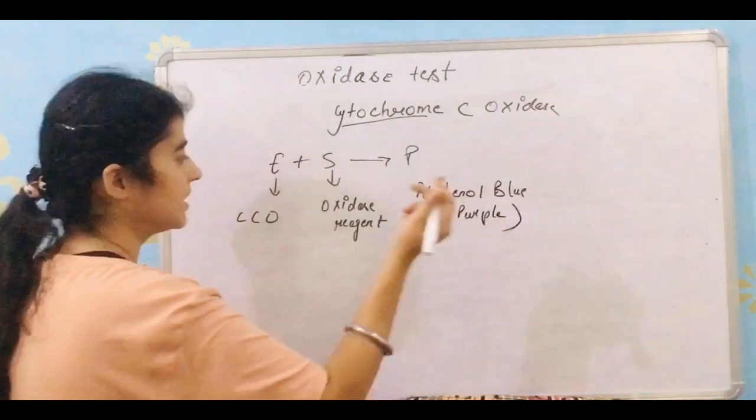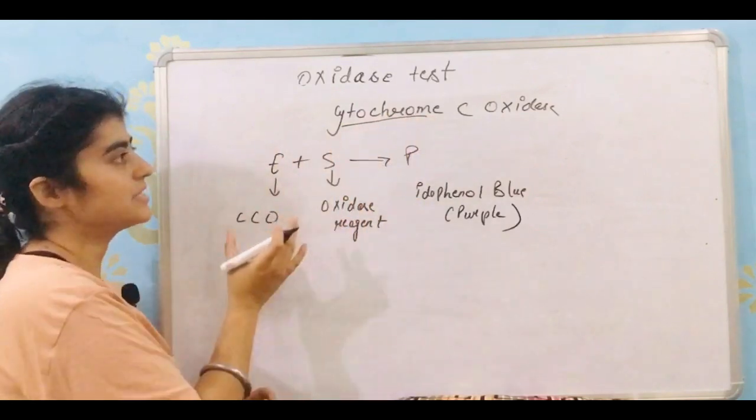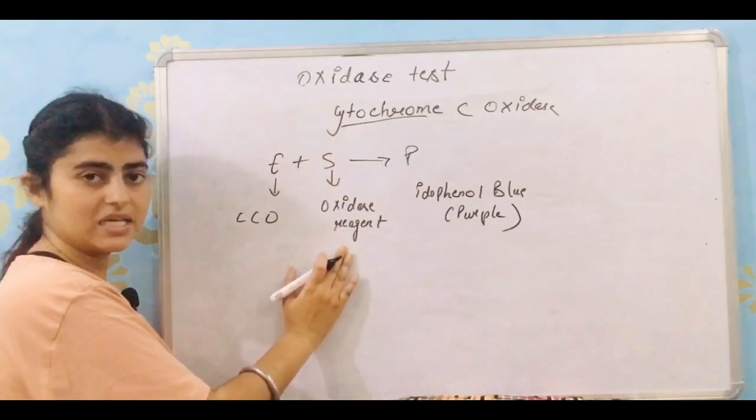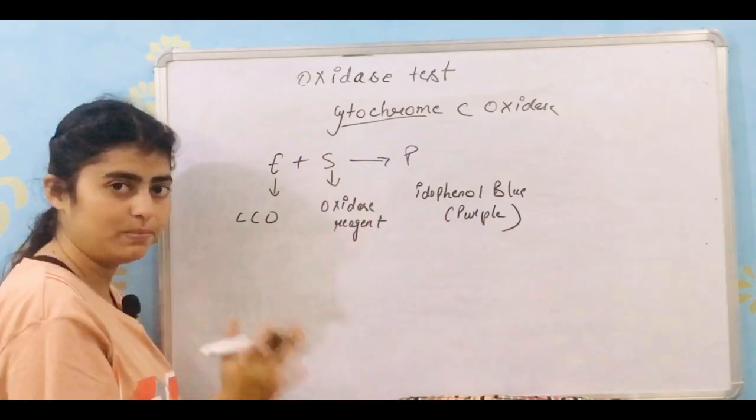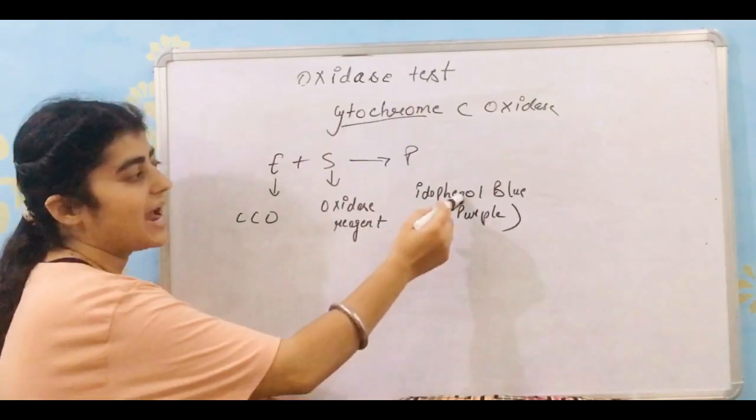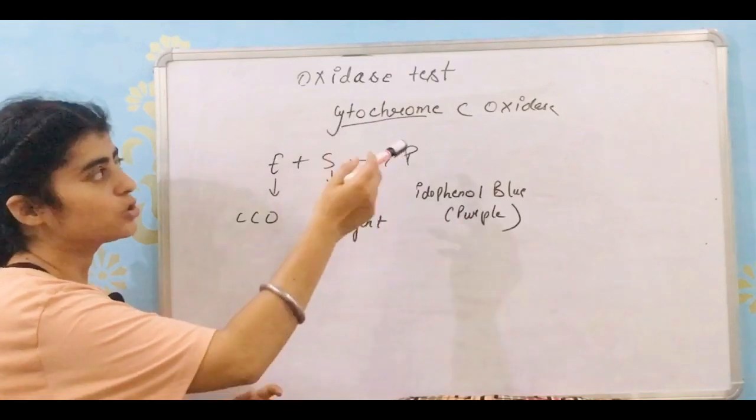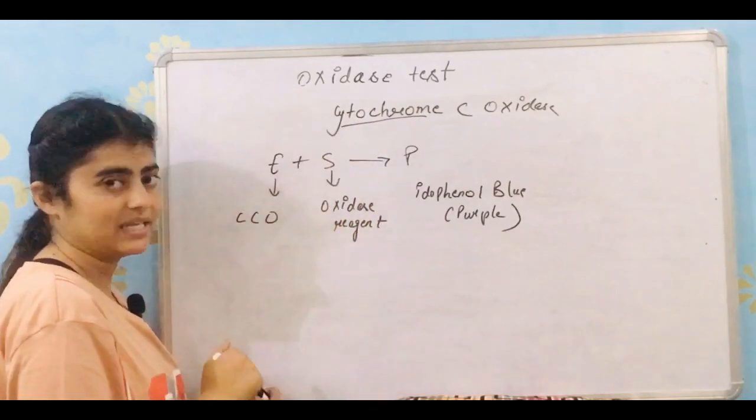And the end product that we get is idophenol blue, that is purple in color. So when this enzyme cytochrome C oxidase reacts with oxidase reagent, it produces purple color, that is idophenol blue. Because of this idophenol blue, it is also called idophenol oxidase enzyme.